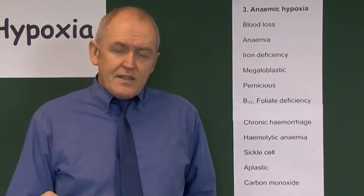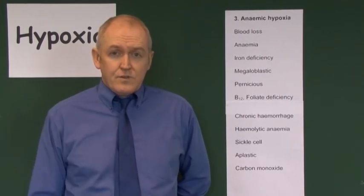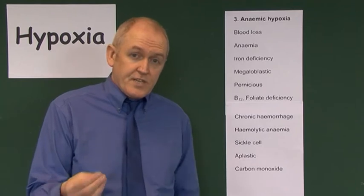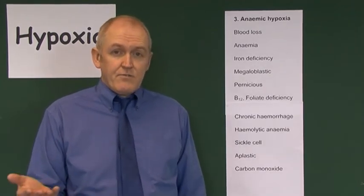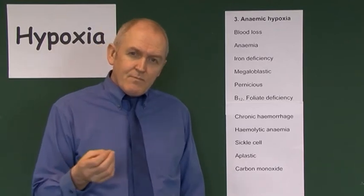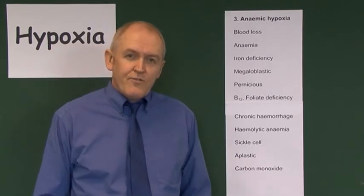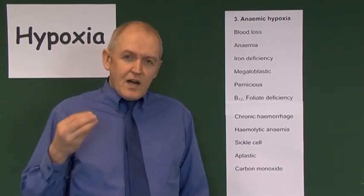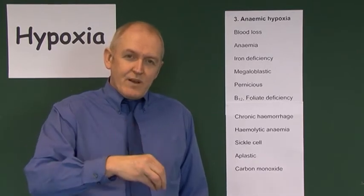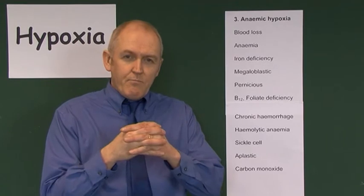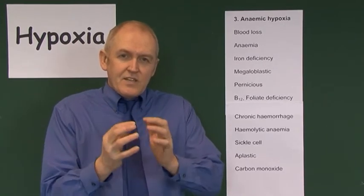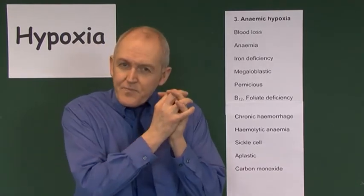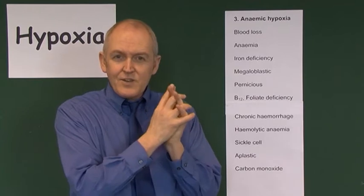Aplastic anemia is where the bone marrow stops producing all blood cells. Patients with aplastic anemia tend to die of immunodeficiency due to loss of white cells before they become very anemic. Carbon monoxide is also a cause of reduced oxygen carrying capacity of the blood, because when carbon monoxide is absorbed into the hemoglobin it forms a stable compound called carboxyhemoglobin, meaning oxygen can't fit onto the hemoglobin as it is already occupied by carbon monoxide.